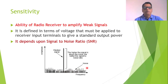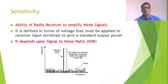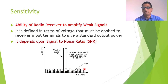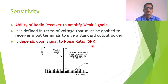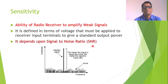When you take the ratio of the amplitude of the wanted signal to that of the noise, this is what we call the signal-to-noise ratio, or SNR. The higher the SNR, the better — you will receive only the wanted signal and all other noise signals are rejected. So SNR plays an important role in determining the sensitivity of the radio receiver.